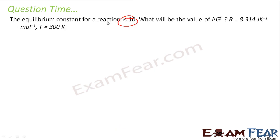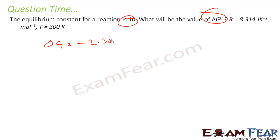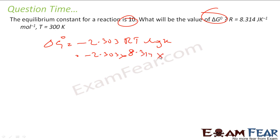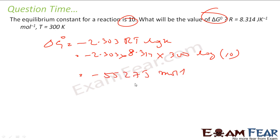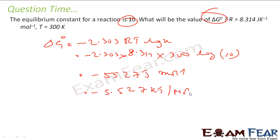The equilibrium constant for a reaction is 10. What is the value of delta G, where R and T are given? Delta G at equilibrium is minus 2.303 RT log K. That becomes minus 2.303, R is 8.314, T is 300 Kelvin, log K is log 2. Solving this, you get minus 5527 joules per mole, that is minus 5.527 kilojoules per mole. Very easy — just application of the formula delta G° equals minus 2.303 RT log K.